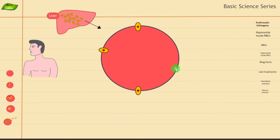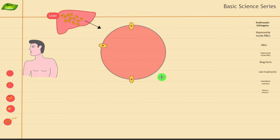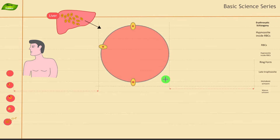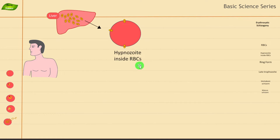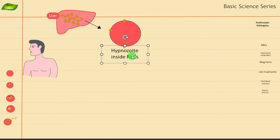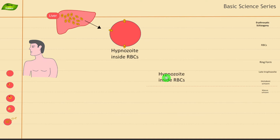We are discussing erythrocytic schizogony — it's a crucial stage in the life cycle of the Plasmodium parasite. When we talk about Plasmodium parasite, there are lots of different species: P. ovale, P. malariae, P. falciparum, P. vivax, and various others. What I'm showing here is merozoites getting inside the RBCs — this is the merozoites entering inside the RBCs.